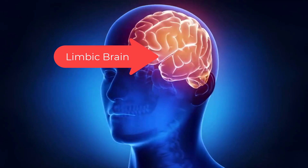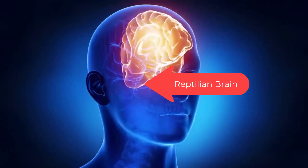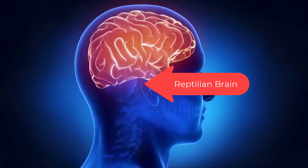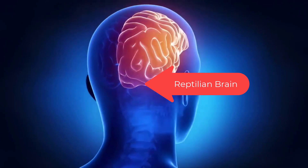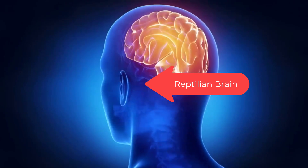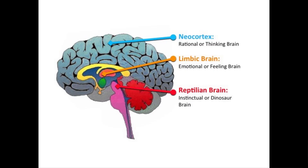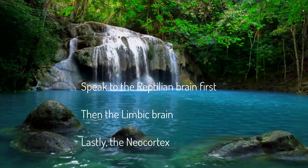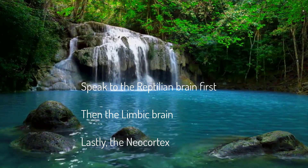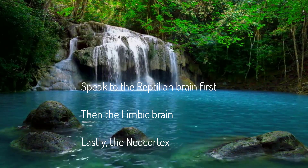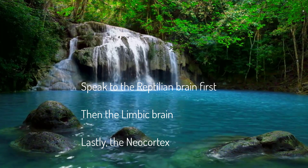The old brain — the reptilian brain — decides. It can take input from the other brains, but it can also decide faster than the blink of an eye, then use the other brains to justify the decision. The reptilian brain is visual and hardwired into the brain stem. It can make survival decisions before you or the other brains can even begin to process the data.